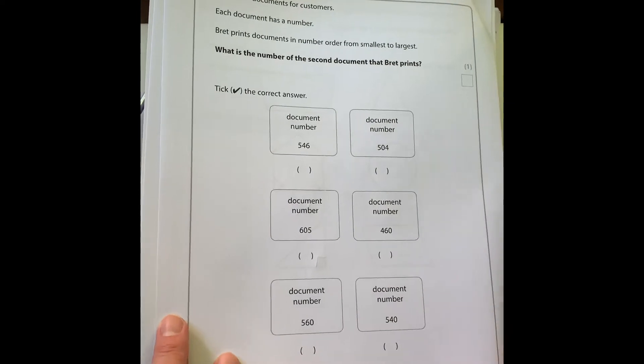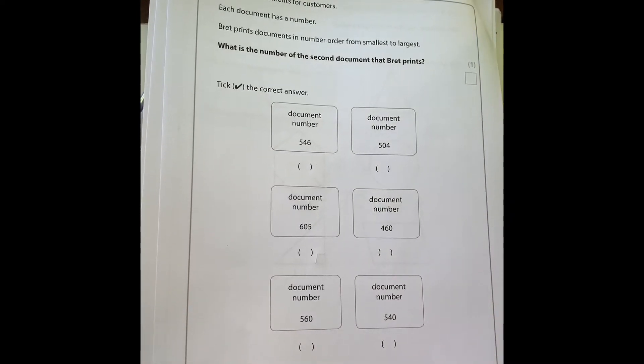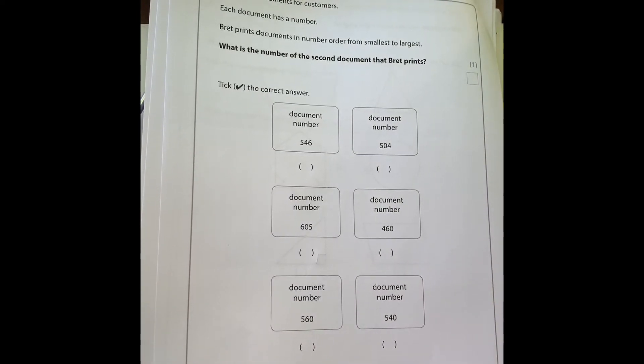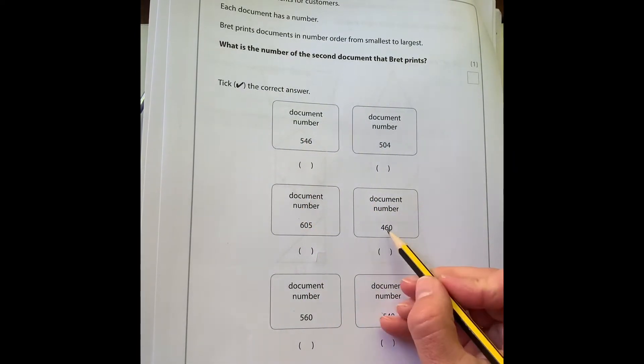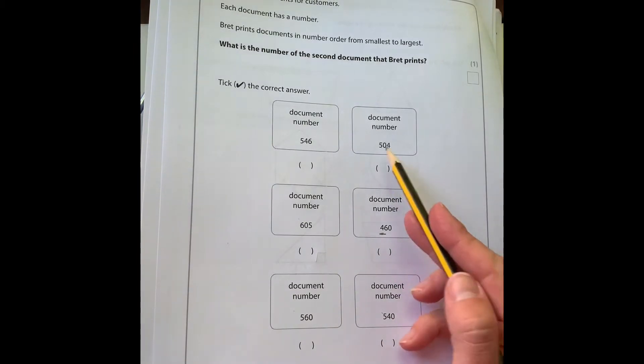Number three: Brett prints documents for customers. Each document has a number and he prints them in number order from smallest to largest. We want to know what is the number of the second document that Brett prints. We're looking for the smallest and then the next smallest. The very smallest one is 460 because 400 is less than 500 or 600.